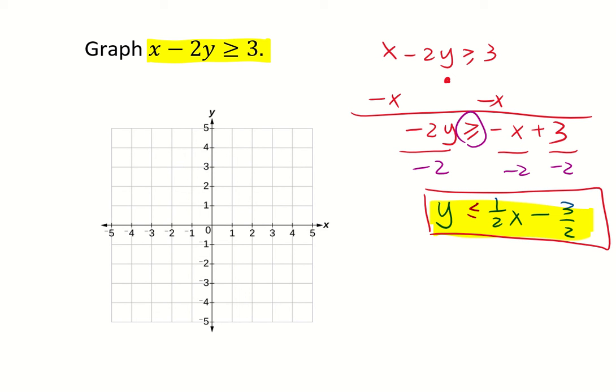Alright so first we'll graph the line y = 1/2 x - 3/2. The slope is 1/2. Y intercept is -3/2, which is -1.5. So we'll find -1.5. It's around here, first point.